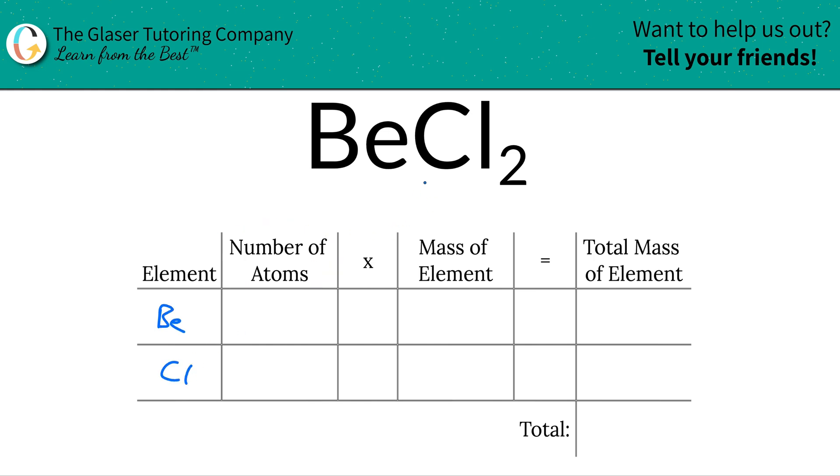The next is to write down the number of atoms, and that's where the subscripts come into play. So at the bottom of beryllium, there is a 1, even though it's not there. There is a 1 there. And then chlorine, the bottom of that is a 2, right? So I have two chlorines, that means. That's what the subscripts tell us.